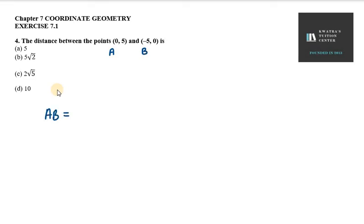That is A, B. We know now the formula for distance is x2 minus x1 whole square plus y2 minus y1 whole square. So x2's value we have here, minus 5.